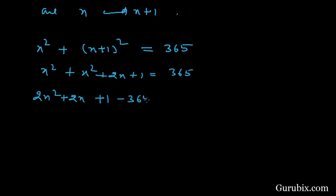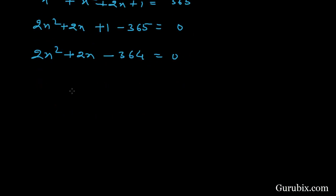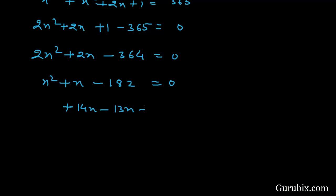Here we have 2x squared plus 2x plus 1. We shall take 365 to the left-hand side, giving minus 365 equals 0. Then it becomes 2x squared plus 2x minus 364 equals 0. Dividing both sides by 2, we get x squared plus x minus 182 equals 0.